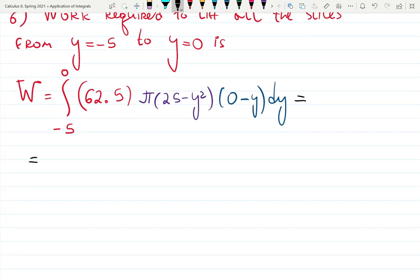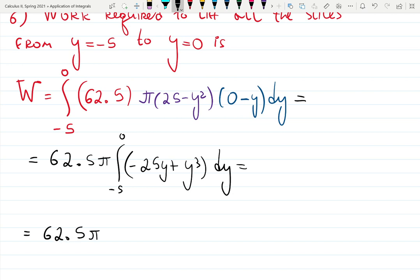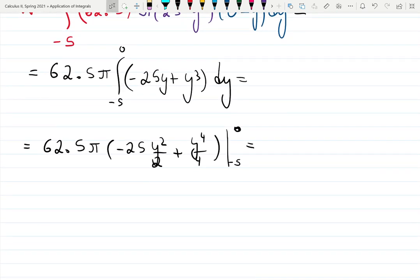In black color, I can just integrate this. Kick out 62.5 pi from minus five to zero. Distribute. That is going to be minus 25y plus y cubed dy. Integrate. That is 62.5 pi times minus 25y squared over 2 plus y to the fourth over 4, evaluated from minus five to zero. Plug the top, and when you plug the bottom, be careful to not forget the negative sign. The answer will be 9,765,625 pi. And the units are foot-pounds. That is the answer.